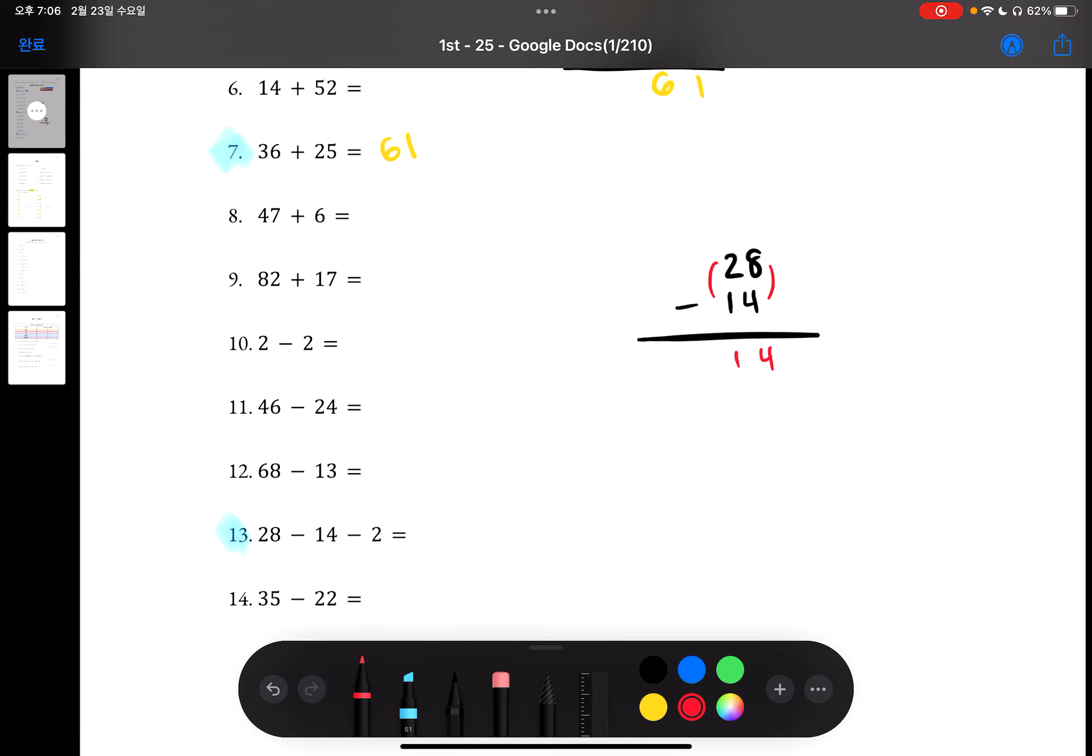And from 14, we have to subtract 2. So from 14, we're going to count backwards twice. So we will get 14, 13, and 12. So 12 will be the answer for number 13.